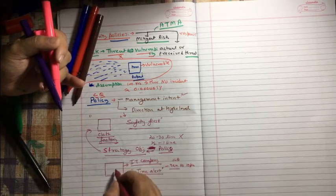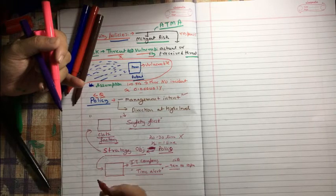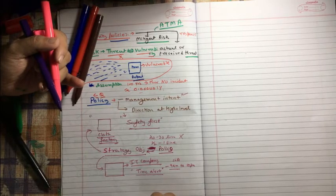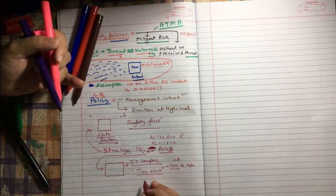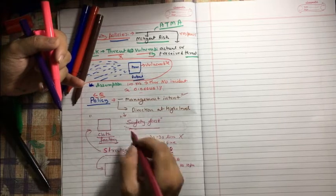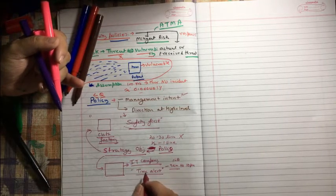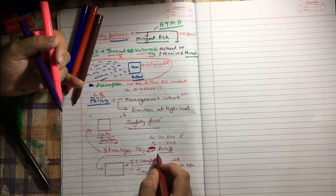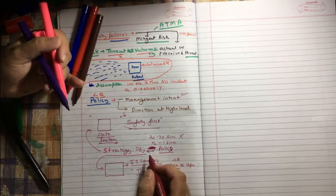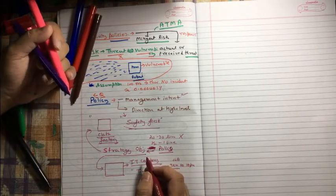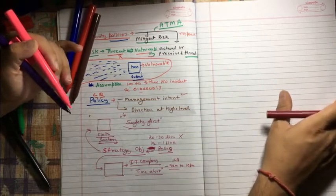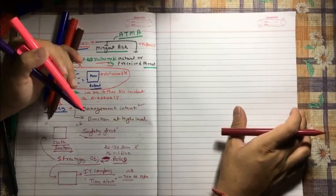So here our strategy is changed. We have a different way of working, we have a different environment. So here the policy also changed. I'm just trying to give you another example to explain how policy may get changed when our objective gets changed. Do you have any question? Let me know.